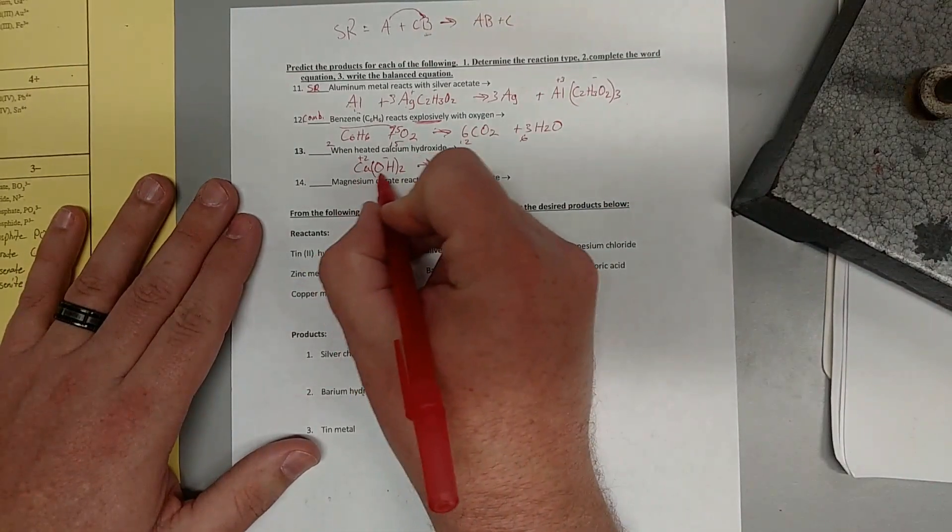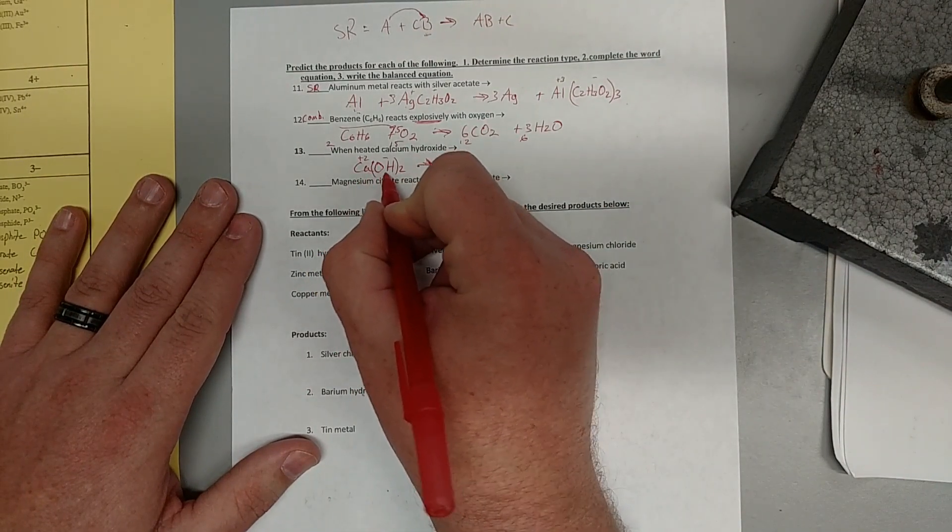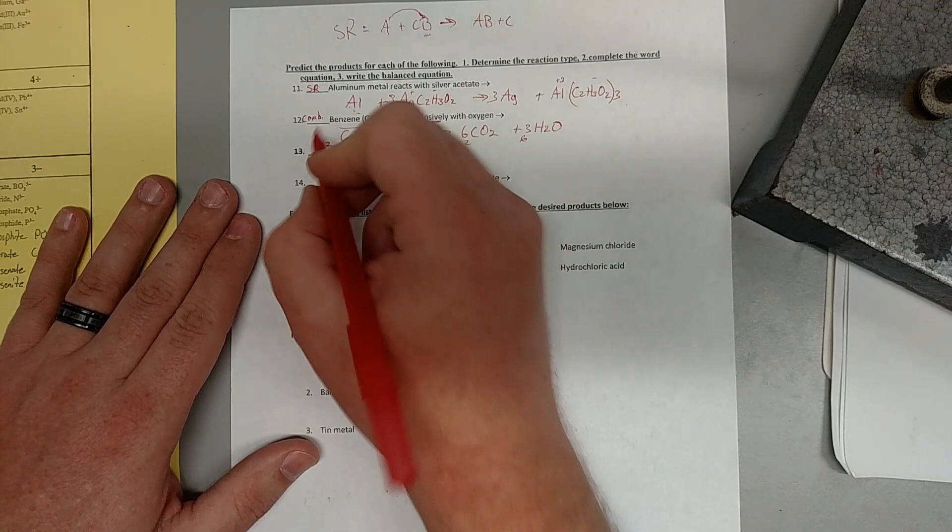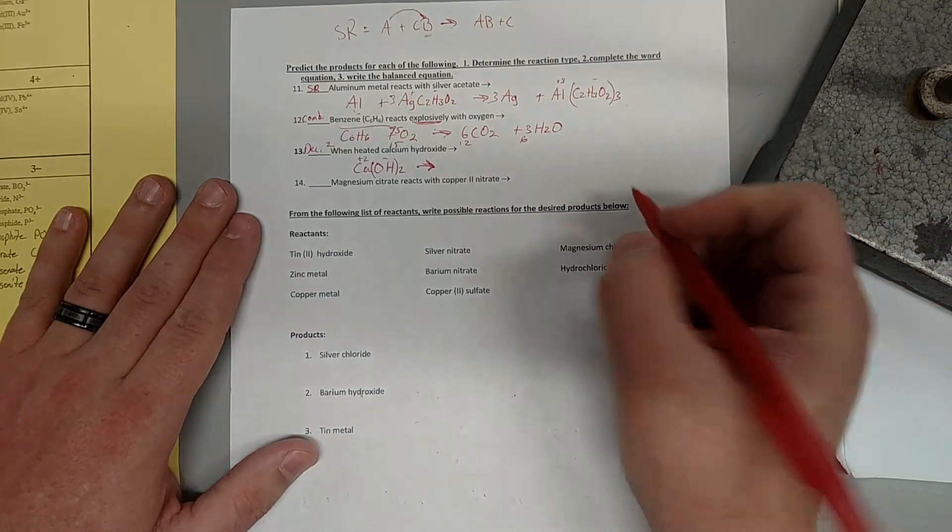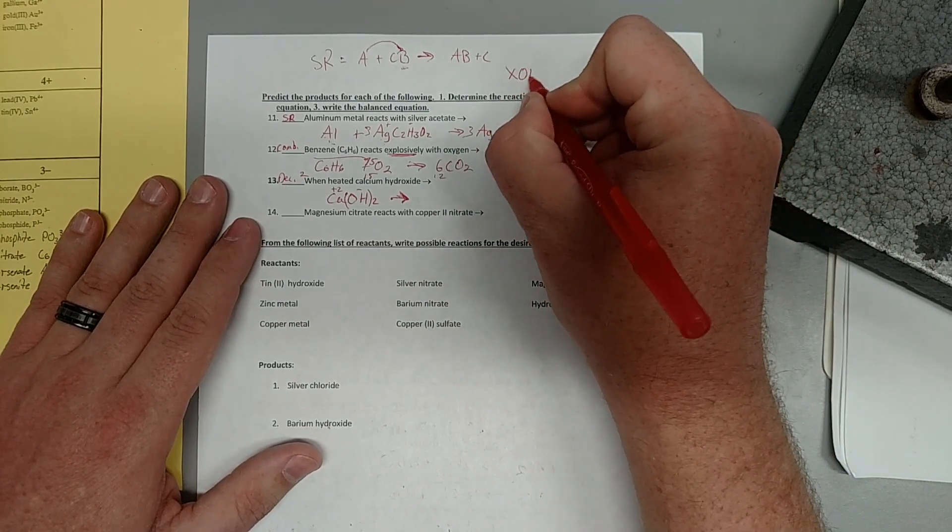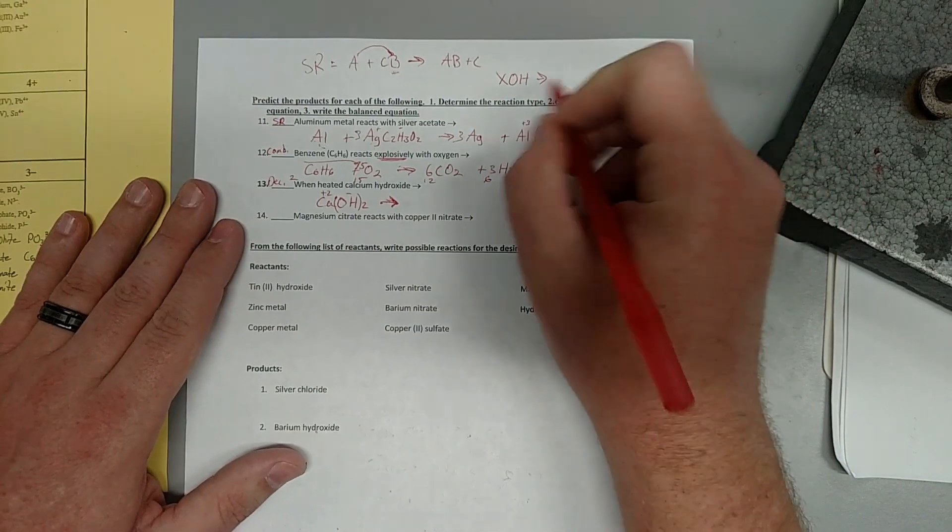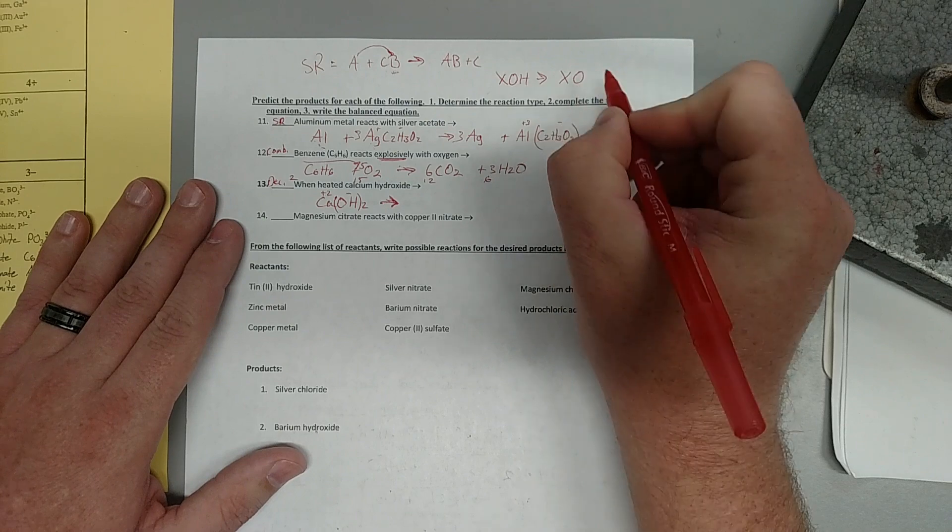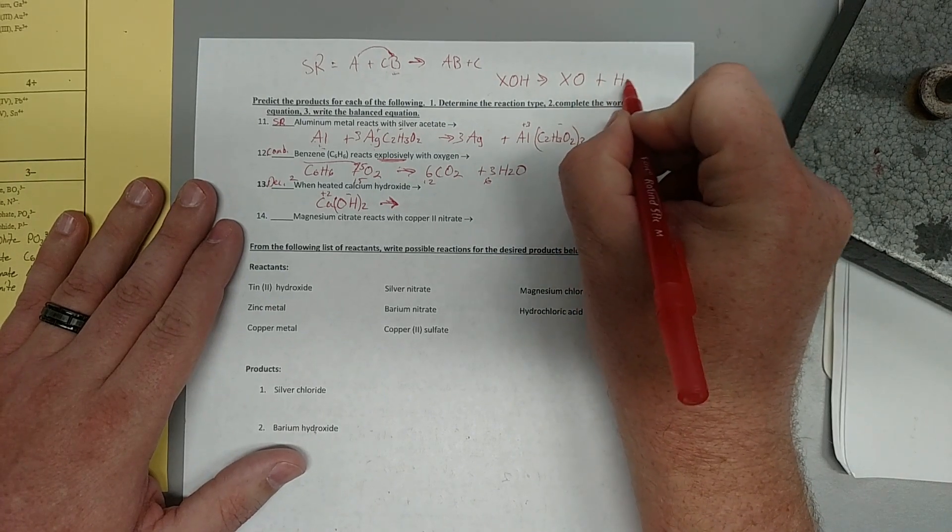Now, it has no other reactant. So, any time we only have one reactant, that is a decomposition. So, this is decomp. Now, this is a special kind of decomp. This is a metal hydroxide decomp. And if you guys remember, metal hydroxide decomps turn into metal oxides and water.